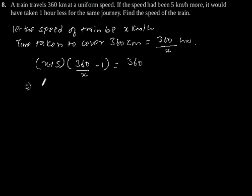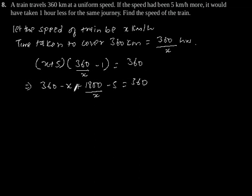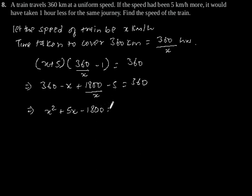This implies 360 minus x plus 1800 by x minus 5 is equal to 360. This will give x squared plus 5x minus 1800 is equal to 0.